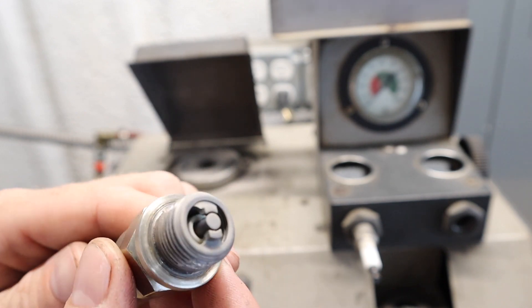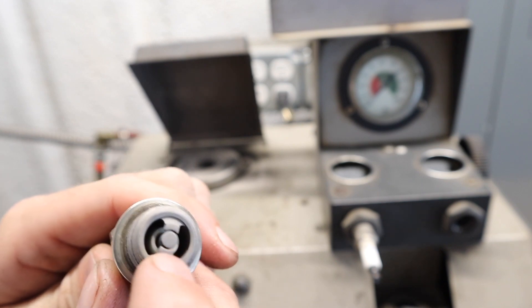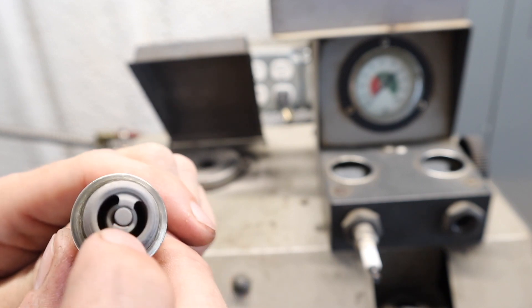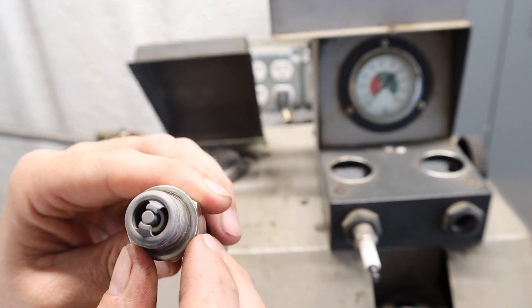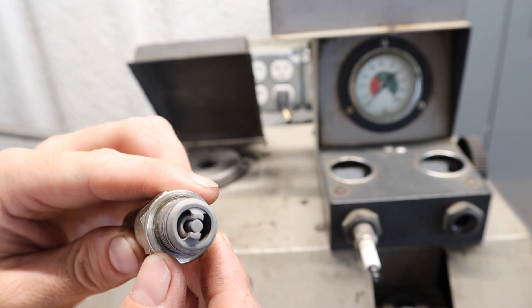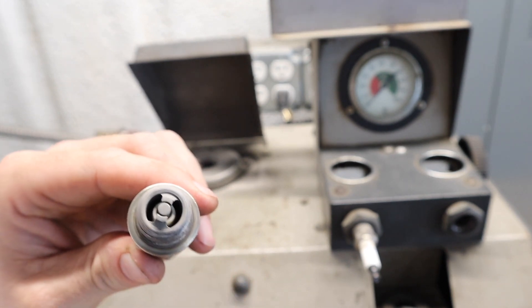That's only about half the process. You want to use a feeler gauge and make sure the gap is set right. If there's too much gap in between there, the spark plug isn't going to spark very well. We're going to check that real quick, and then there's one more process we need to do.